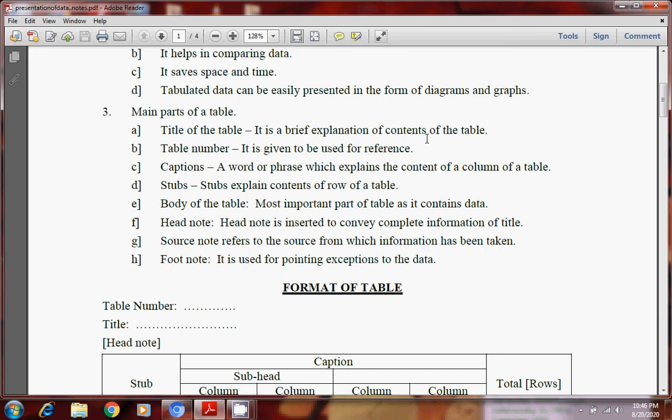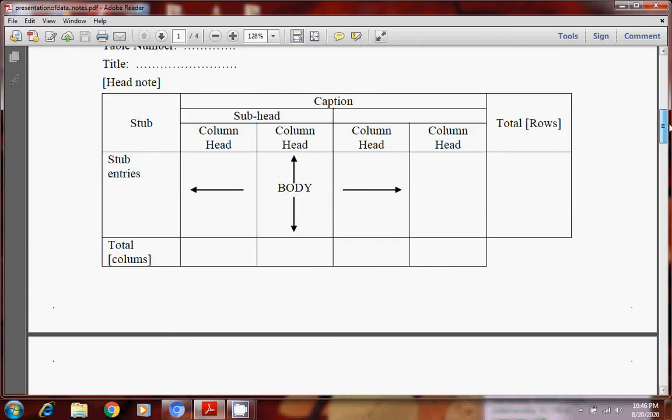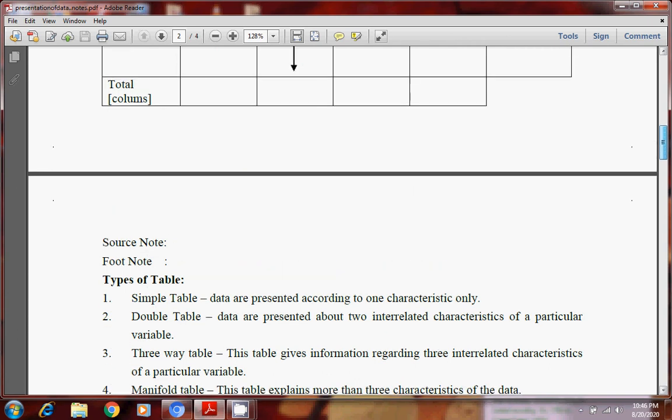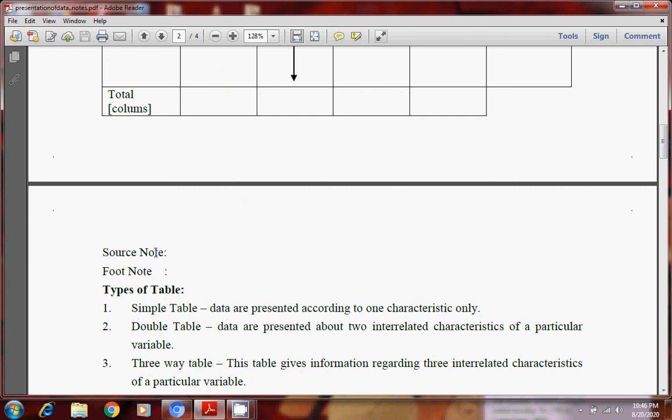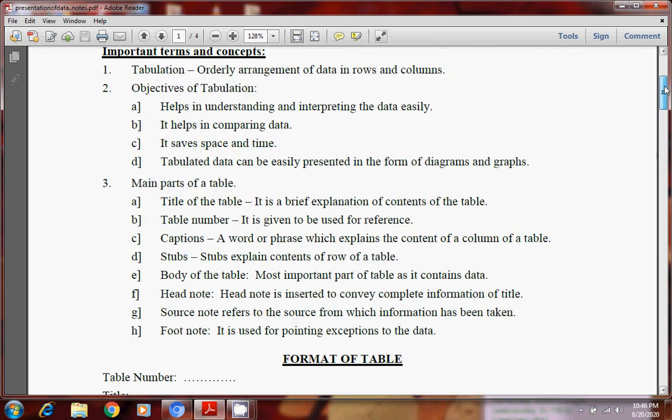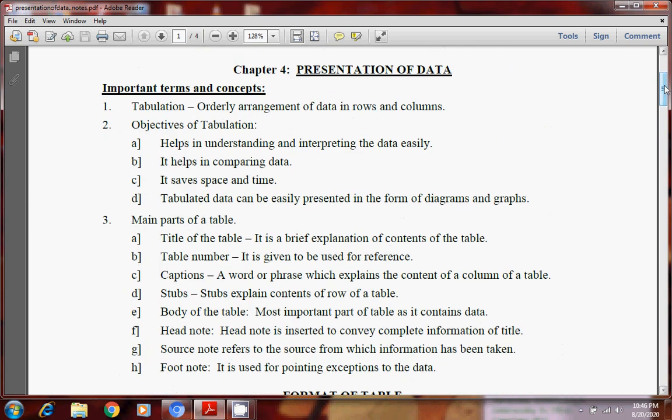Source note refers to the source from which information has been taken. When we are making a table, below given is the format. I will just scroll the screen to show you. See, we write source note also. See here at the bottom you can see source note. Here you can see source note. Footnote. So source note means from where this data in the table has been taken. We have to acknowledge the source in the source note. Then footnote, it is used for pointing exceptions to the data. Means if there are any exceptions in the data, then it is shown using footnote.